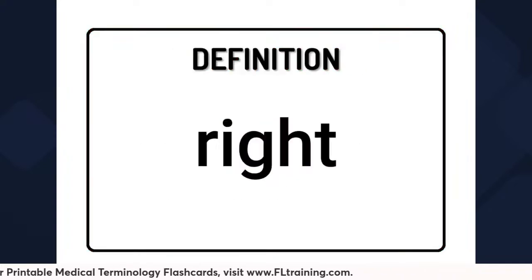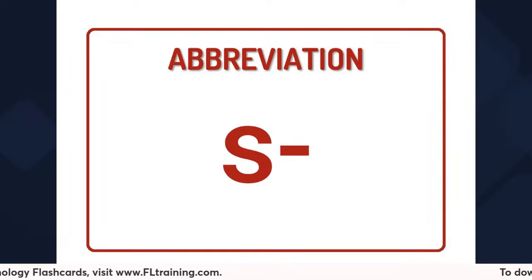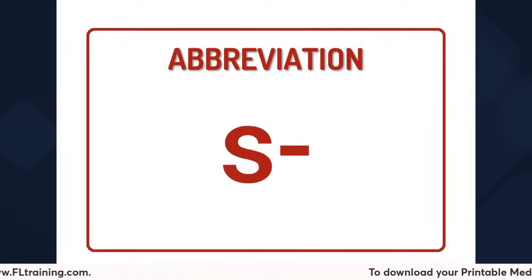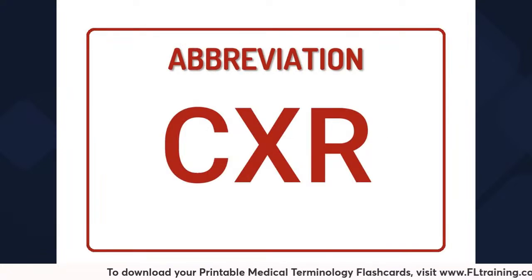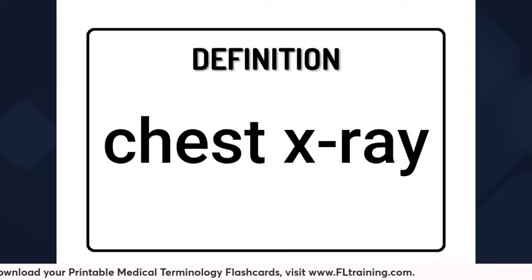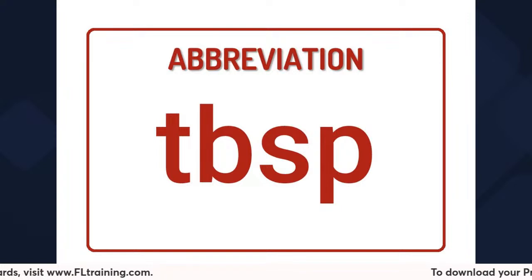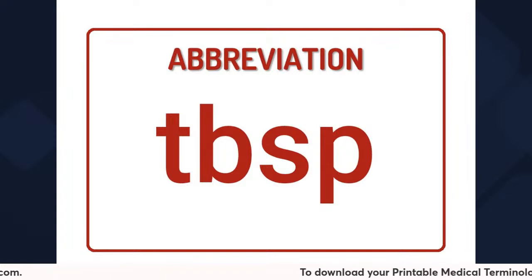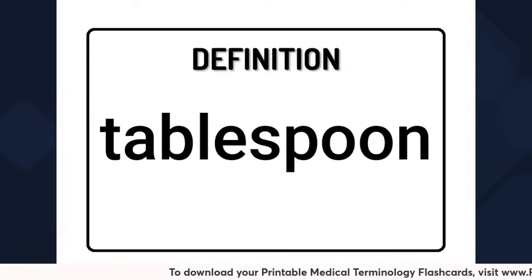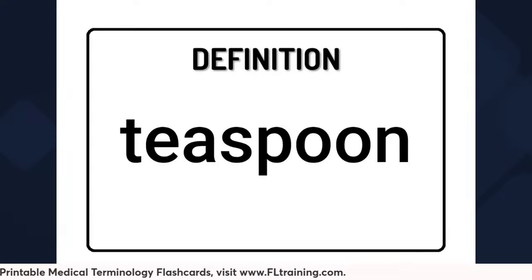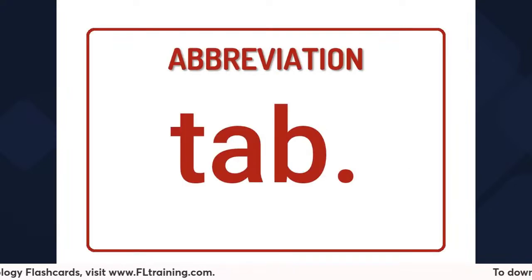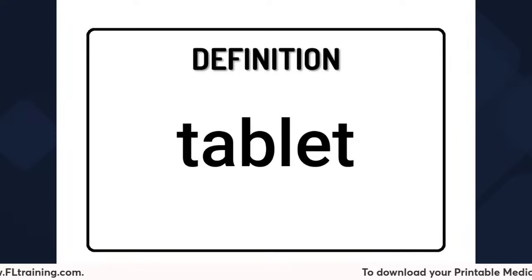R-T means right. S with a line over it means without. C-X-R is chest x-ray. T-B-S-P is tablespoon. T-S-P is teaspoon. Tab is short for tablet, referring to a pill.